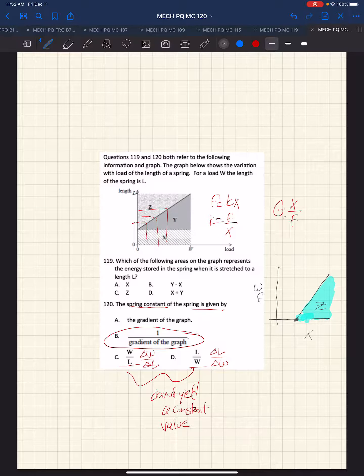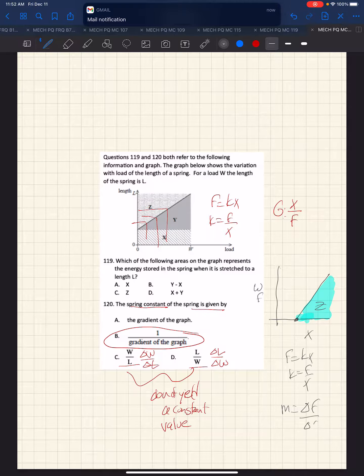And then the slope of that graph would give us, if f equals kx, and we want k to be f over x, then we could see the slope of that line would be delta f over delta x, which would give us the spring constant.